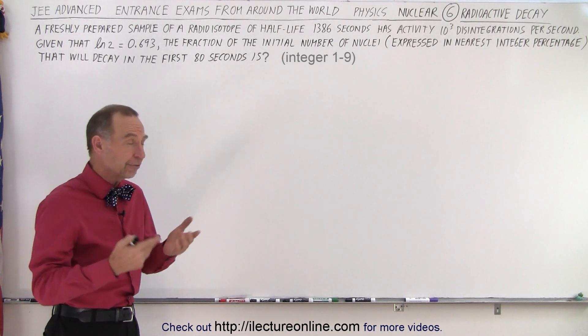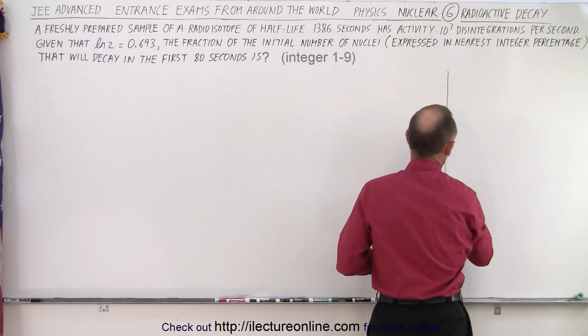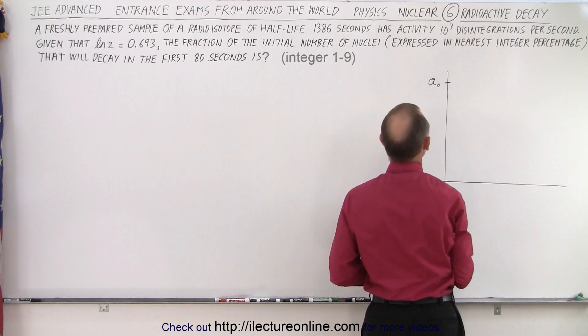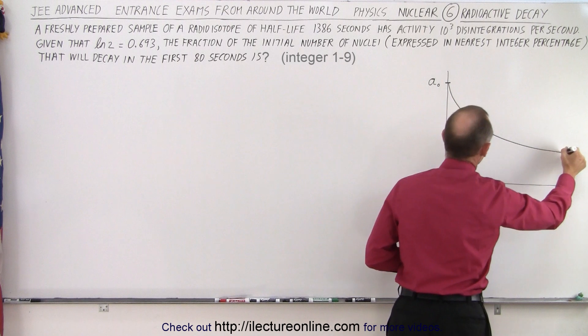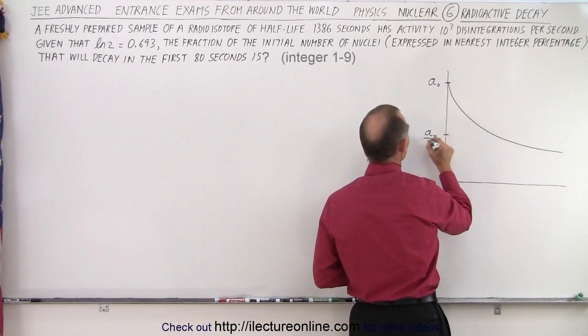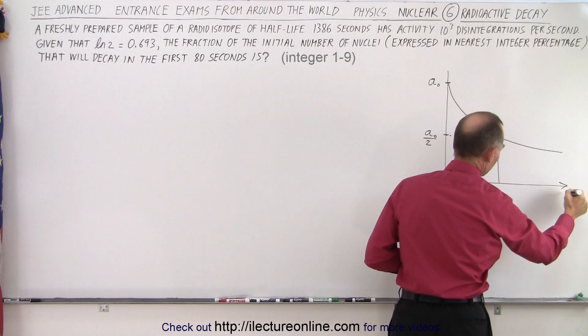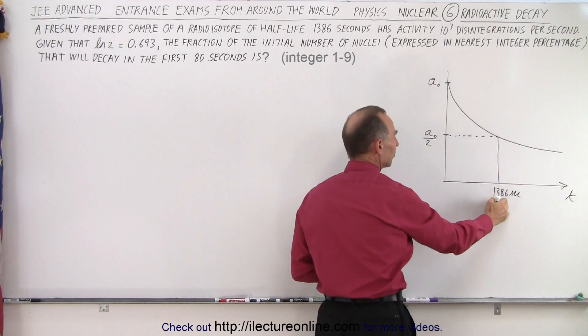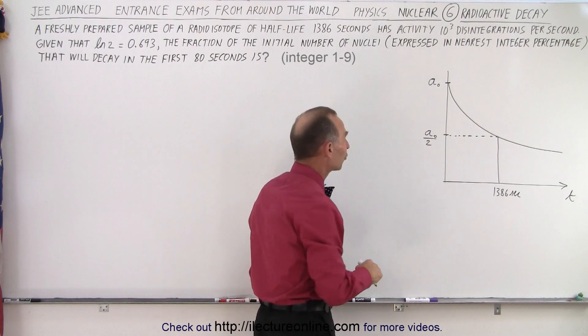So for the benefit of learning from this, let's see what that would look like on a graphical representation. Let's say that we start with a certain number of disintegrations, call that a sub 0—that's the original activity. We would expect that the activity would decrease like this and that eventually you would reach half the activity, a sub 0 divided by 2, after a half-life has passed. So on the horizontal axis this would be time and this would be 1,386 seconds. After 1,386 seconds, which is the half-life, the activity would have dropped down to half of its original activity.